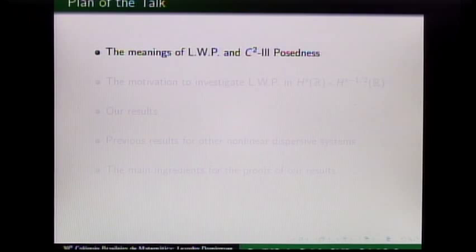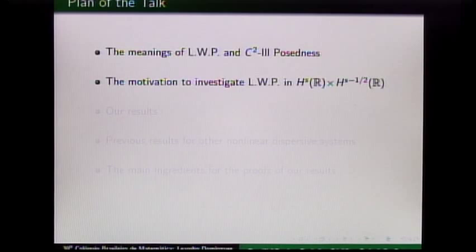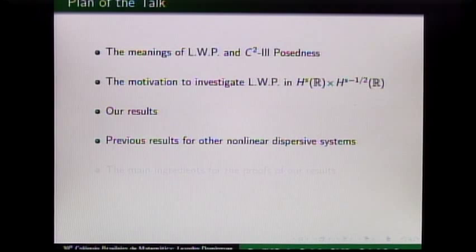This talk is organized as follows. First, I will give the meanings of local well-posedness and C2 ill-posedness, and review these definitions to explain why our results are sharp. Then we will show the motivation of Becheranova-Gawa-Pons and Pescher to investigate local well-posedness only at this regularity. Next, we will show our results and compare them with previous results for other nonlinear dispersive systems. Finally, I will give the main ingredients for the proofs of our results.